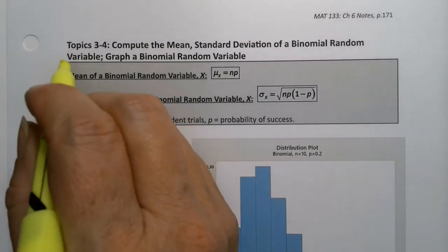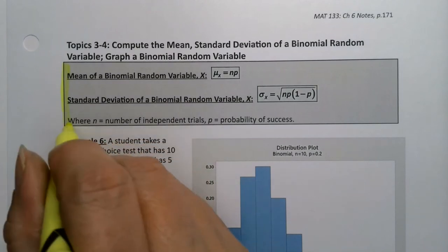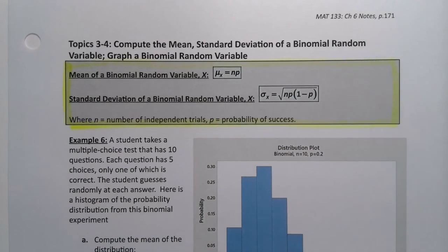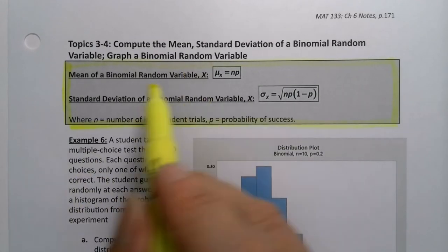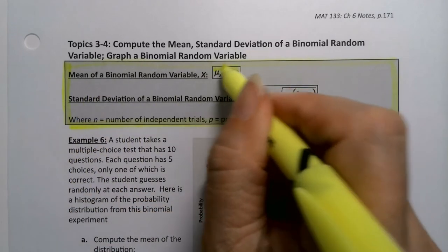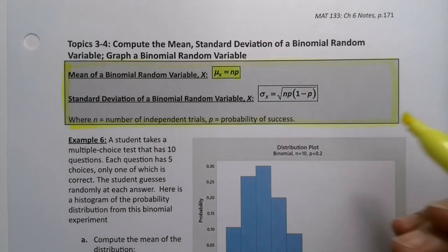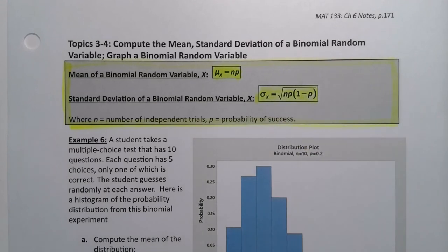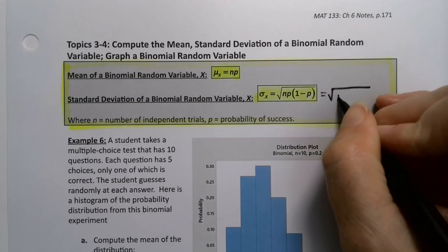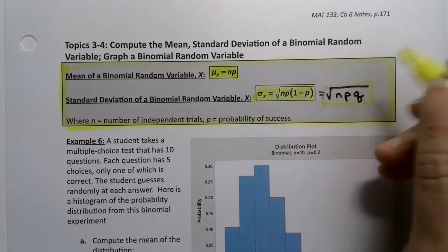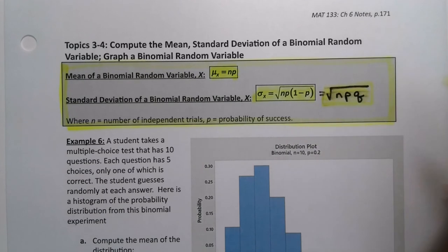Just as in 6.1, because the binomial probability distribution is a probability distribution, that means it has a mean and a standard deviation, just as would any distribution. There's a formula for it, because binomial random variables follow very particular patterns.